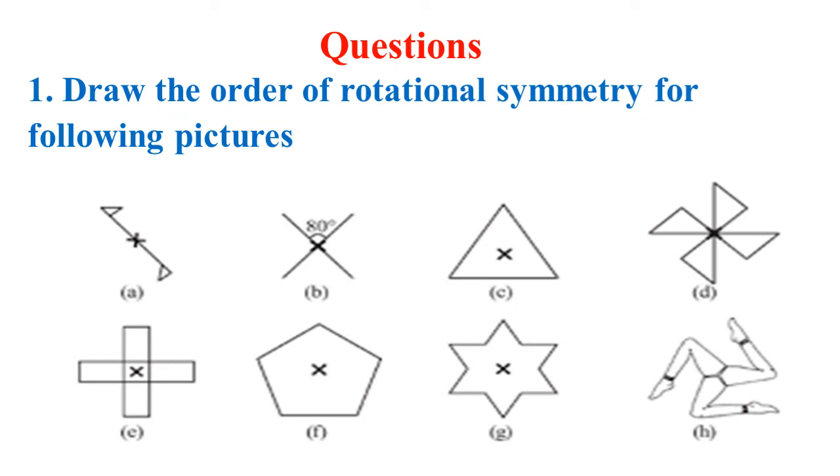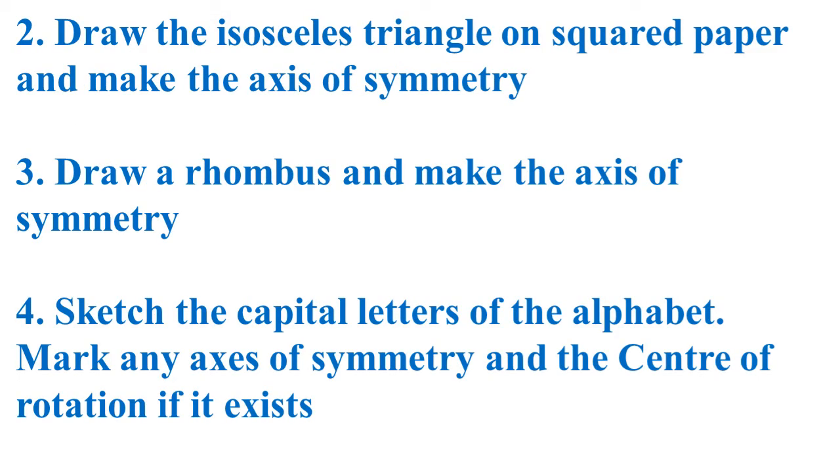Here are some questions you have to do at home. First question: draw the order of rotational symmetry for the following pictures. Second question: draw an isosceles triangle on squared paper and mark the axis of symmetry. Third question: draw a rhombus and mark the axis of symmetry. Fourth question: sketch the capital letters of the alphabet, mark any axis of symmetry and the center of rotation if it exists.